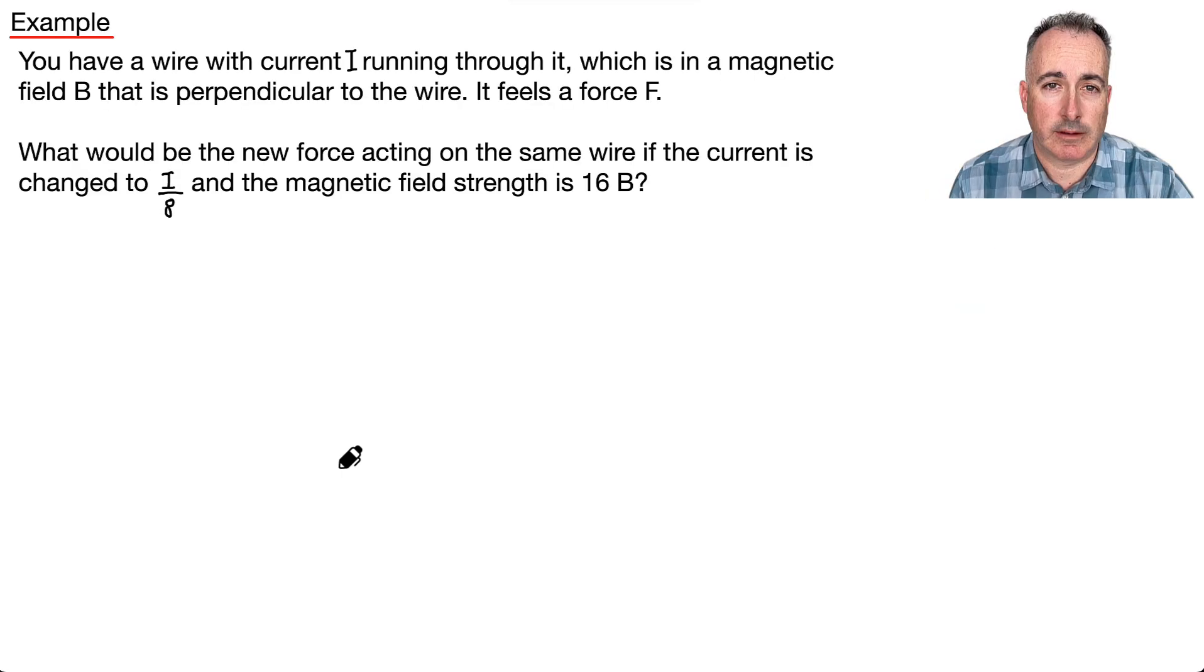There we go. Okay, so instead of talking about submarines, let's do a real kind of example that you might have on an exam. So you have a wire with current I running through it, and it's in a magnetic field, B, that is perpendicular to the wire. And it feels a force, F. Before doing anything else, then, I can already recognize what I'm going to do is F equals BIL.